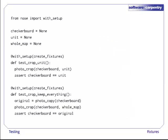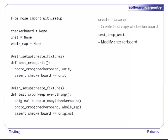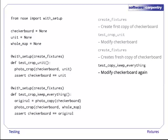Here's an example showing setup per test that actually does some testing. We've left out the definition of create_fixtures because you've probably seen enough rectangles by now. When we run this program, Nose calls create_fixtures to create the first copy of the checkerboard fixture, then runs test_crop_unit which modifies that checkerboard. Nose then runs create_fixtures again, assigning a fresh photo to checkerboard, and then runs test_crop_keep_everything which modifies that copy in turn, and so on.